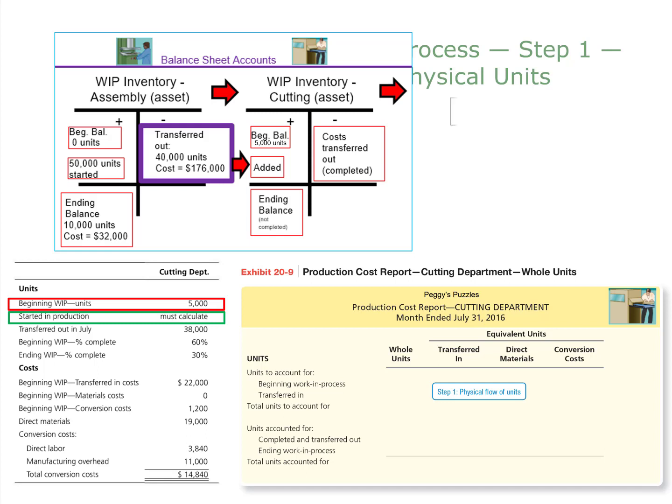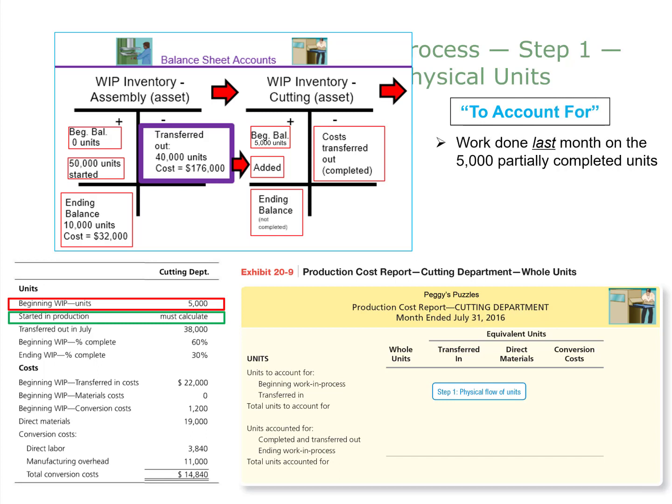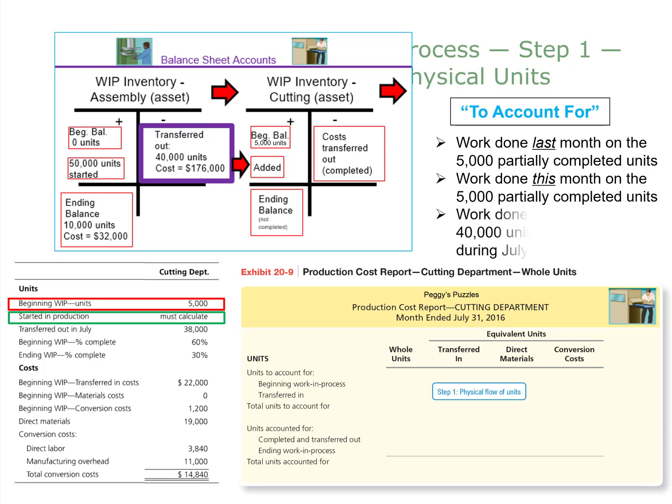The cutting department has to account for three different types of units: work done last month on the 5,000 partially completed units; work done this month on those 5,000 partially completed units to finally get them completed; and work done this month on the 40,000 units transferred in during July. As we create the production cost report for the cutting department, we'll be using the weighted average method. This method determines the average cost of each equivalent unit of production by combining beginning inventory costs with current period costs. There is also the FIFO method, but we are only using the weighted average method for now.